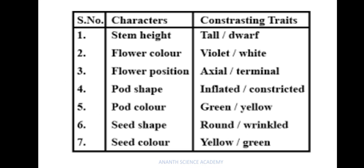Let's recall the 7 characters and their contrasting traits: stem height — tall or dwarf; flower color — violet or white; flower position — axial or terminal; pod shape — inflated or constricted; pod color — green or yellow; seed shape — round or wrinkled; seed color — yellow or green.